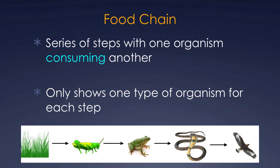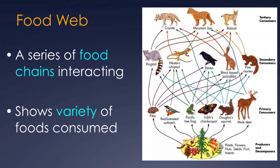A food web is a series of food chains interacting — multiple food chains all connected with each other, making a web. It shows a variety of foods consumed, not just focusing on one organism at a time, but a whole bunch of different ones interacting together.